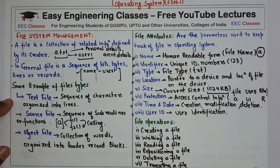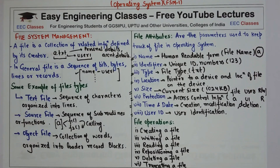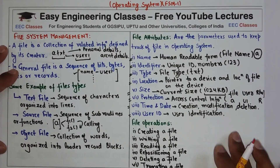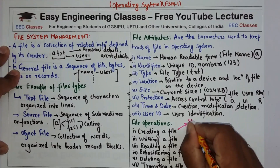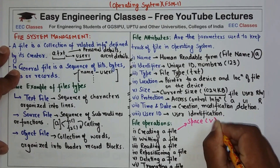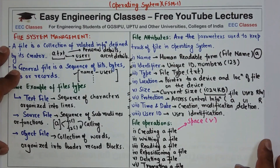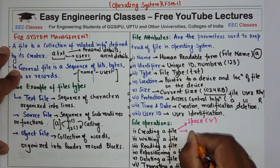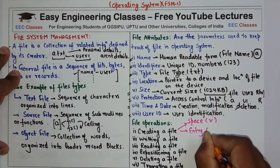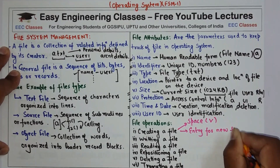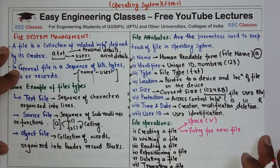Next topic is file operations. The first operation is creating a file, which requires two steps: first, you have to find space in the file system where the new file can be created. Once the space is found, you create the new file and enter it into the file system.